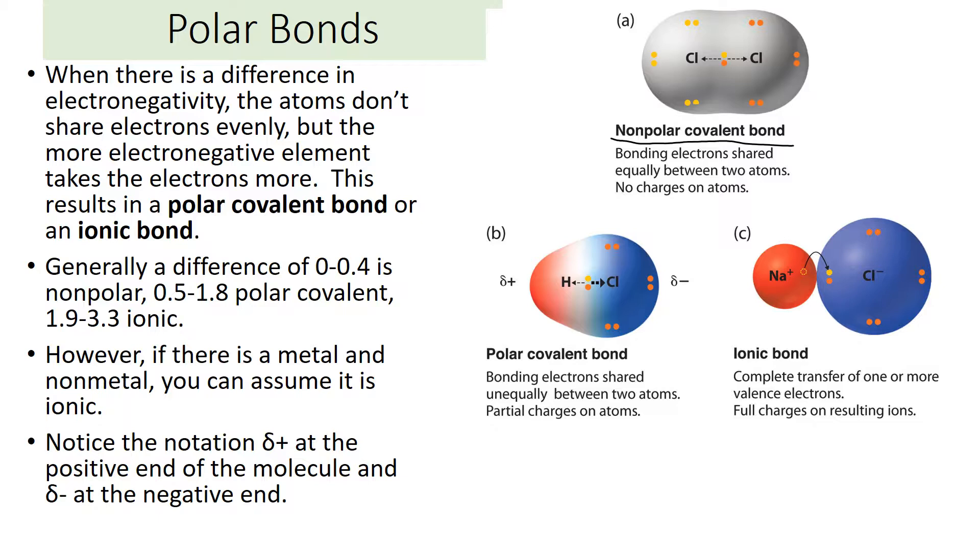Now, if they are not evenly split, for example, chlorine and hydrogen. Remember, chlorine was three electronegativity. Hydrogen, I think, is 2.1 in electronegativity. And so they're not the same. Chlorine is more electronegative. And so it's going to attract the electron more than the hydrogen. Even though they're sharing the electron, they're not sharing it equally. And so that's called a polar covalent bond.